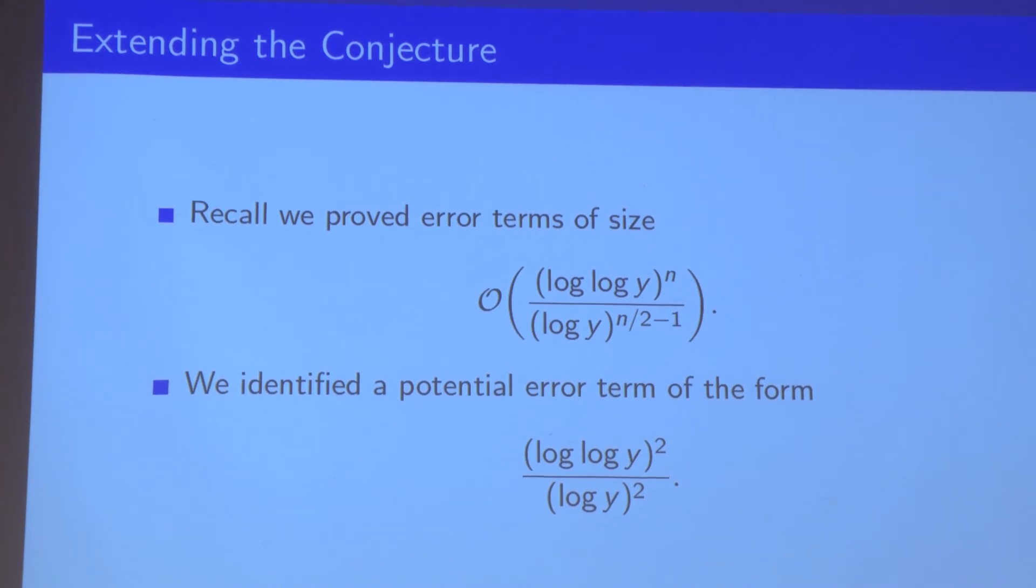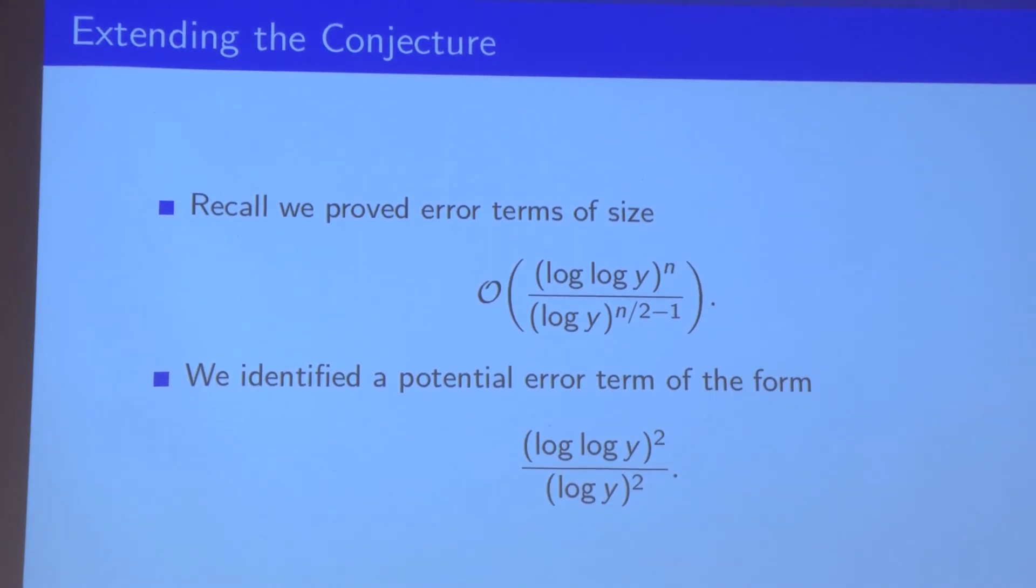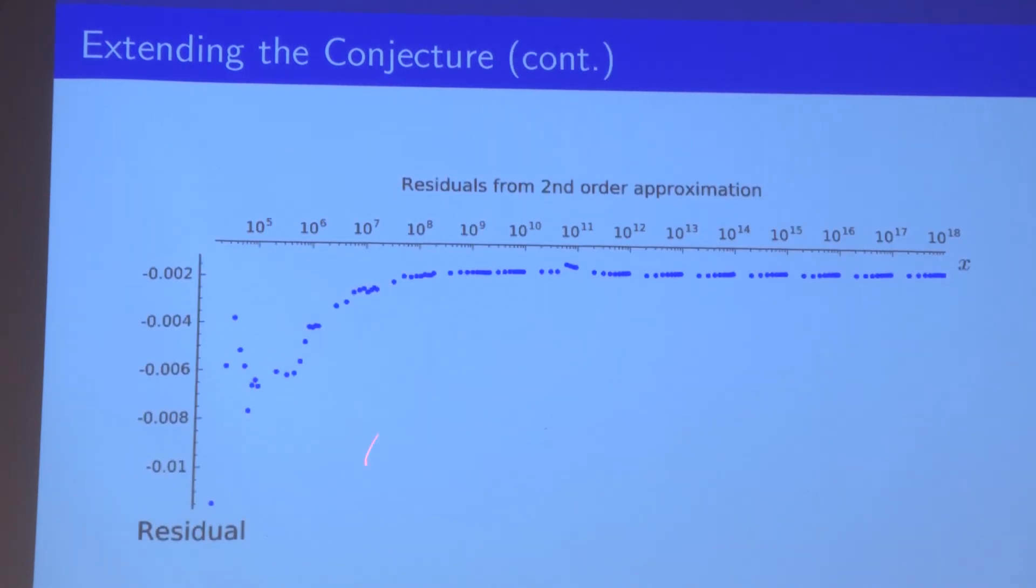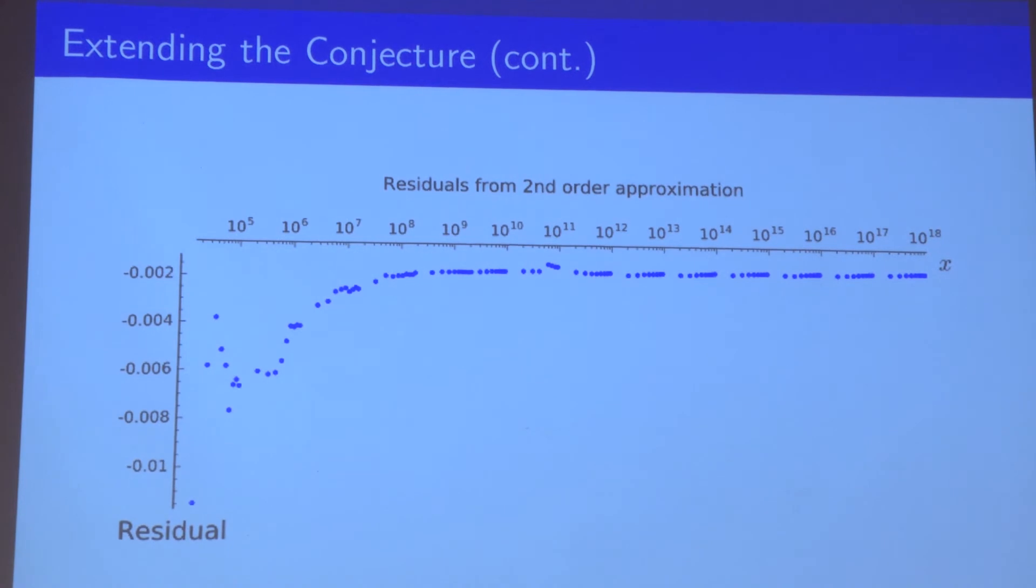Adding this new term into our conjecture and accounting for that, we subtracted and found the error, and we reduced our error. Here's a graph of the error. It turns out that we managed to reduce the error in the conjecture by an order of magnitude. So this seems like another promising result.